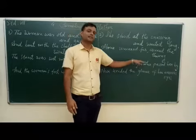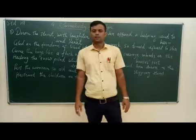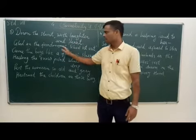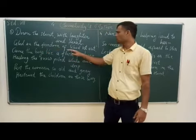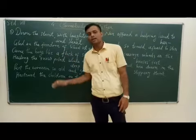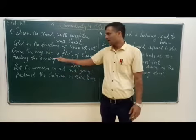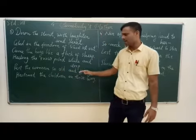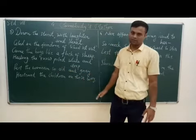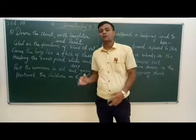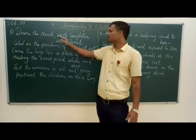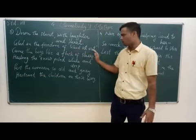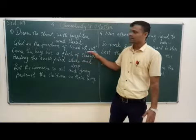This is the explanation of the second stanza. Now let's understand the third stanza: 'Down the street with laughter and shout, glad in the freedom of school let out, came the boys like a flock of sheep, hailing the snow piled white and deep.'